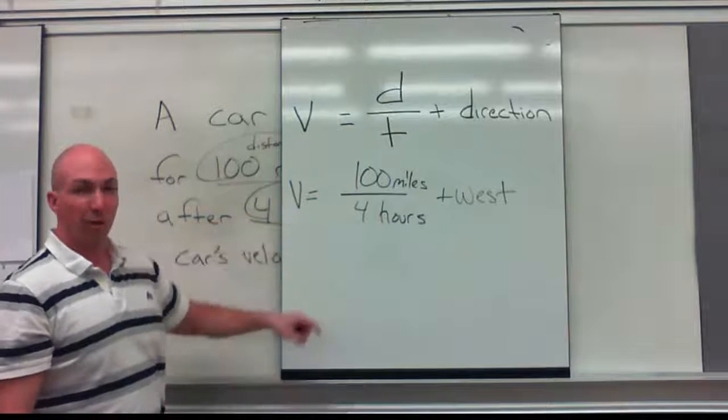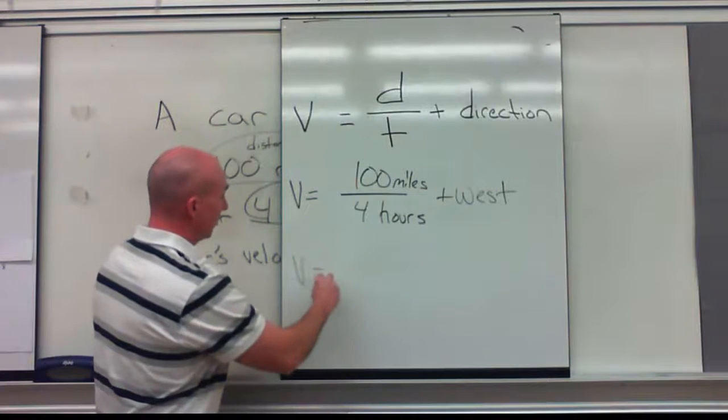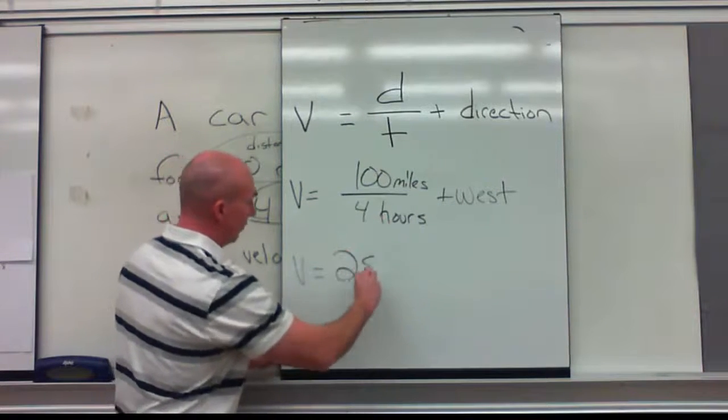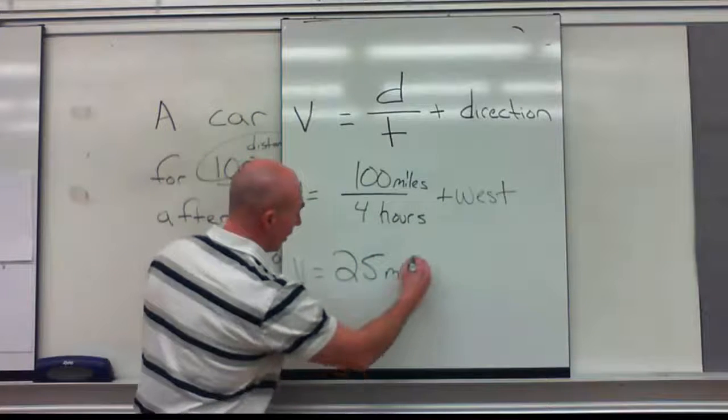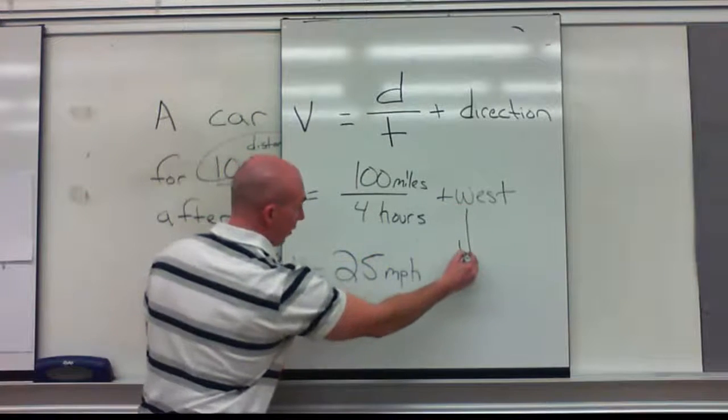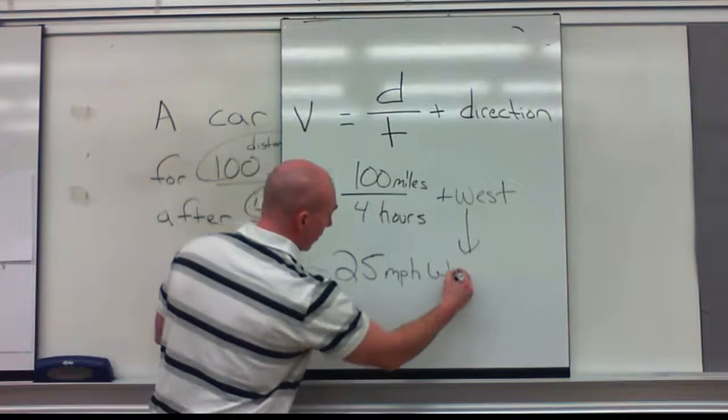100 divided by 4, our velocity is going to equal 25 miles per hour west.